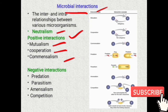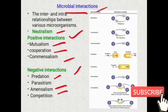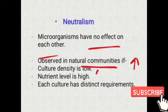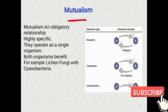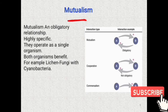In negative interactions, organisms get harm from each other. For example, in the case of pathogenesis of various diseases, we get a negative impact — we get disease. This is the example of negative interaction. Negative interactions include predation, parasitism, amensalism, and competition.